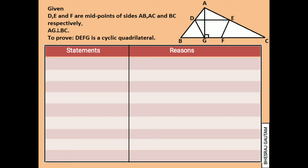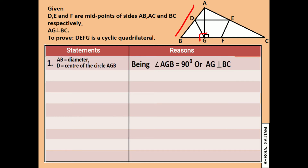First of all, studying the given figure and information, we can write AB as diameter, since it makes a 90-degree angle at point G — which is the same as the theorem that a diameter makes a 90-degree angle on the circumference of a circle. This means D is the center, and AD, BD, and DG are the radii of the circle.